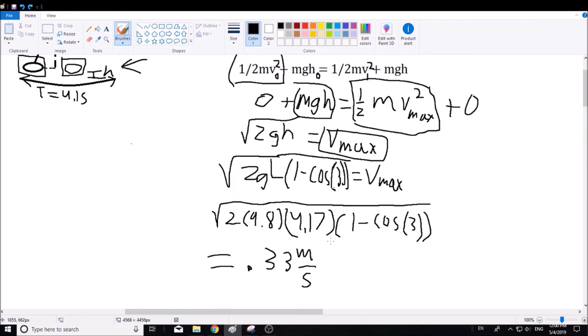Now we just plug everything in: 2 times 9.8, the gravity, times the length, and this height component. We get that the maximum velocity is 0.33 meters per second.